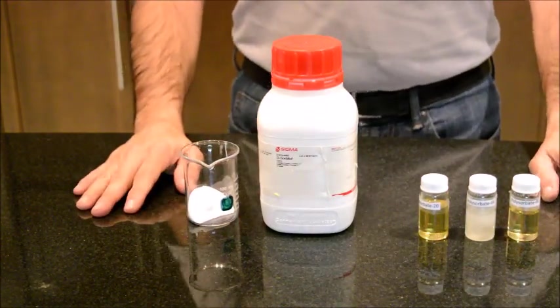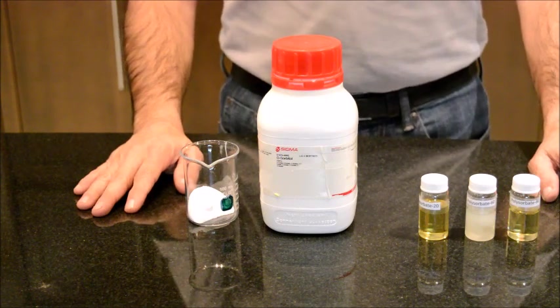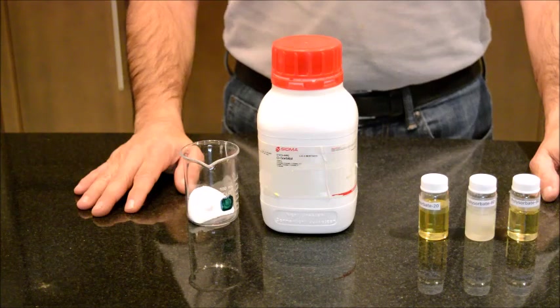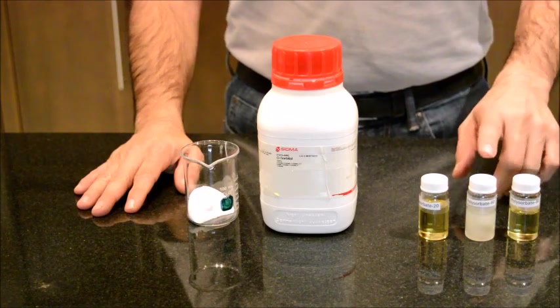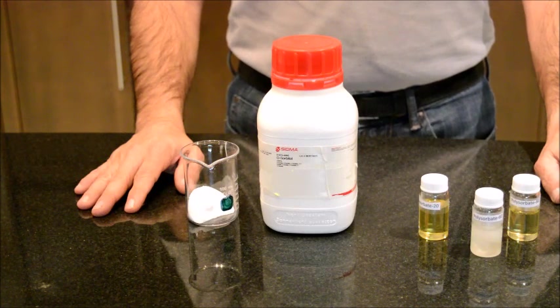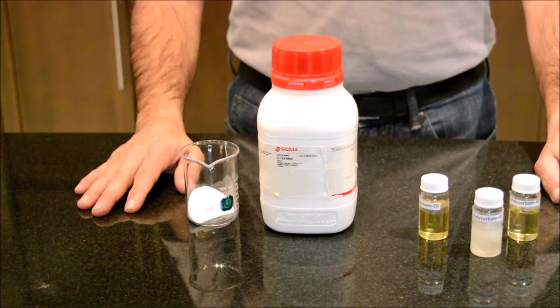Hello everybody and thank you for watching another video from this channel. Today I'm going to talk about polysorbates, specifically polysorbate 60. Polysorbates are emulsifying agents heavily used in food and pharmaceutical industries.